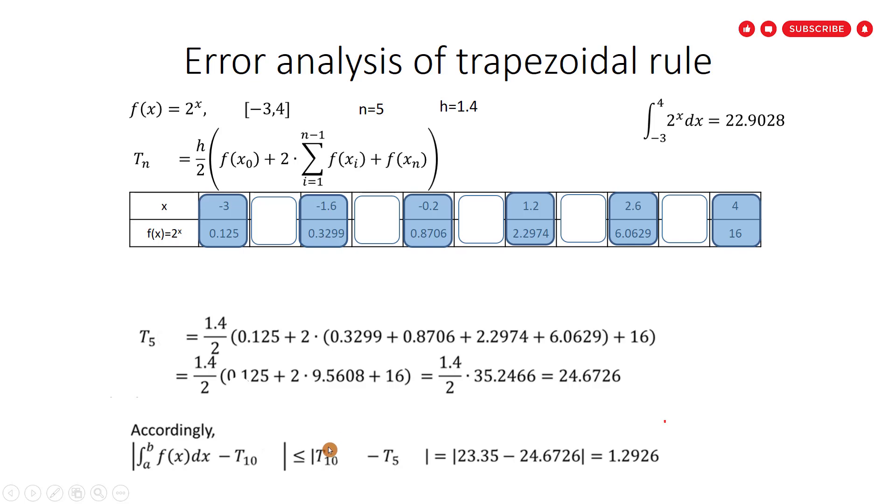The error will be t_10 minus t_5 equal to the absolute value of 23.35 minus 24.6726 equal to 1.2926. That is the error. You have to be sure, for this error estimation, that the number of original subintervals must be even. That's all. I hope it can be helpful. Have a nice time.